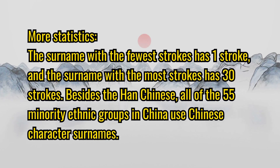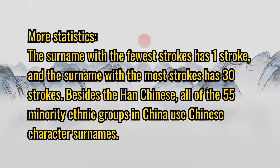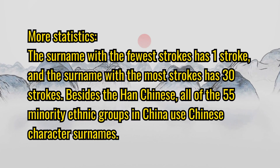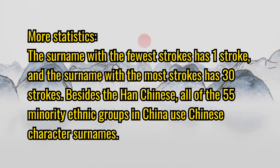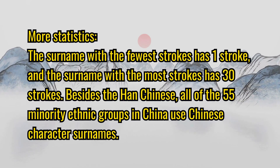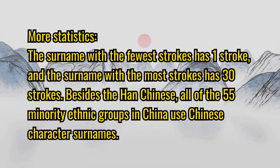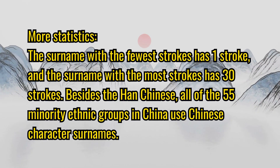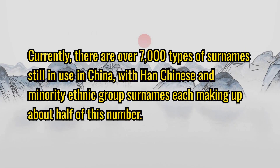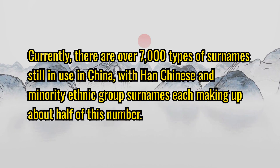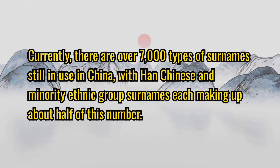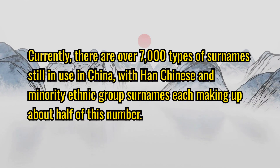More statistics: the surname with the fewest strokes has one stroke, and the surname with the most strokes has 30 strokes. Besides the Han Chinese, all 55 minority ethnic groups in China use Chinese character surnames. Currently, there are over 7,000 types of surnames still in use in China, with Han Chinese and minority ethnic group surnames each making up about half of this number.